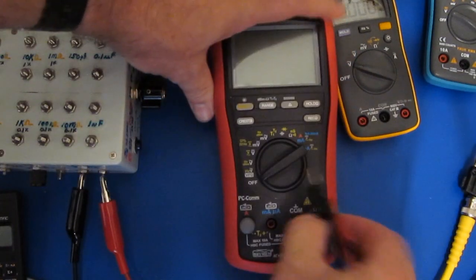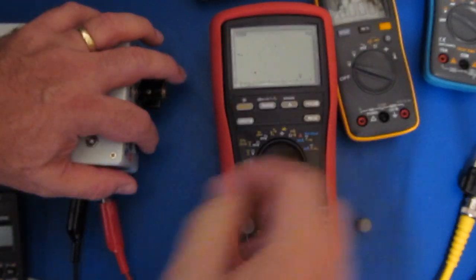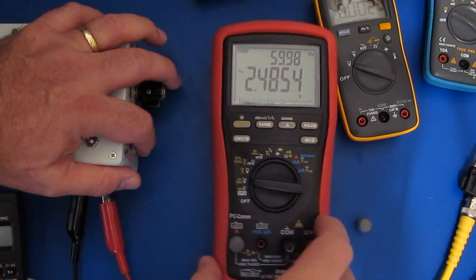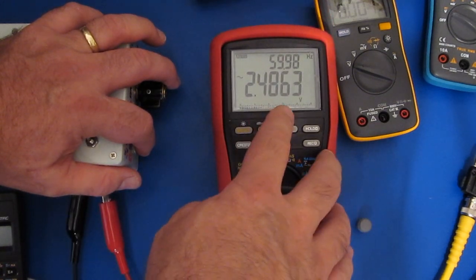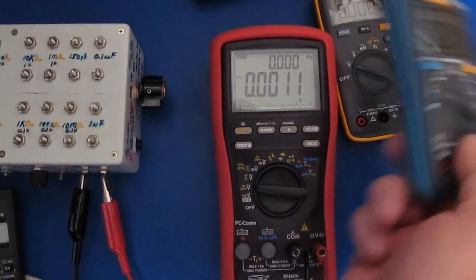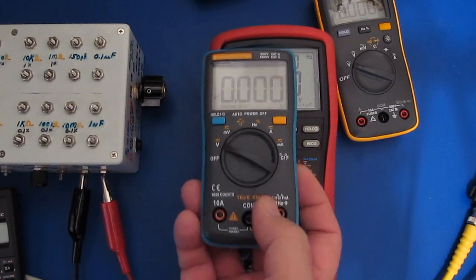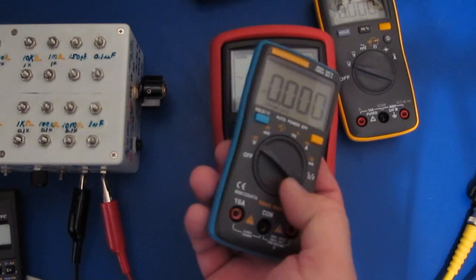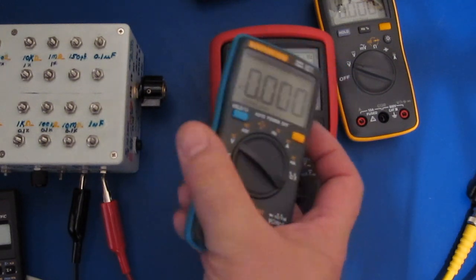So if we attach our Brahman BM869S, of course this is a true RMS meter, and you can see it reads 2.486 or so. So I thought what I'd do is hook up a few of these meters in parallel and then run some more complex waveforms through them. Then we'll see how this Cosuntest ZT-102 performs.